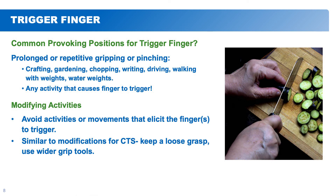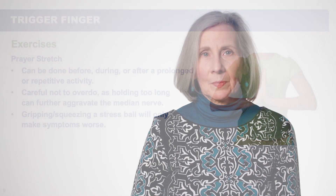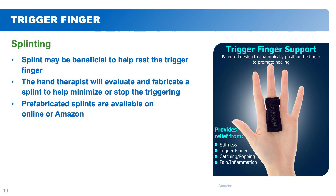For trigger finger, common aggravating positions are similar to carpal tunnel — prolonged repetitive gripping and pinching, crafts, gardening, driving, holding a steering wheel tightly, using weights, or any activity that causes the finger to trigger. We'll modify activities to keep a loose grasp on tools and reduce repetitive activities. The purse stretch relaxes the tendon that goes through the finger; again, don't overdo it, and squeezing a stress ball would not be helpful. Splinting can be very beneficial — a splint positions the tendon in a more relaxed position, and we can also fabricate a custom one in therapy.